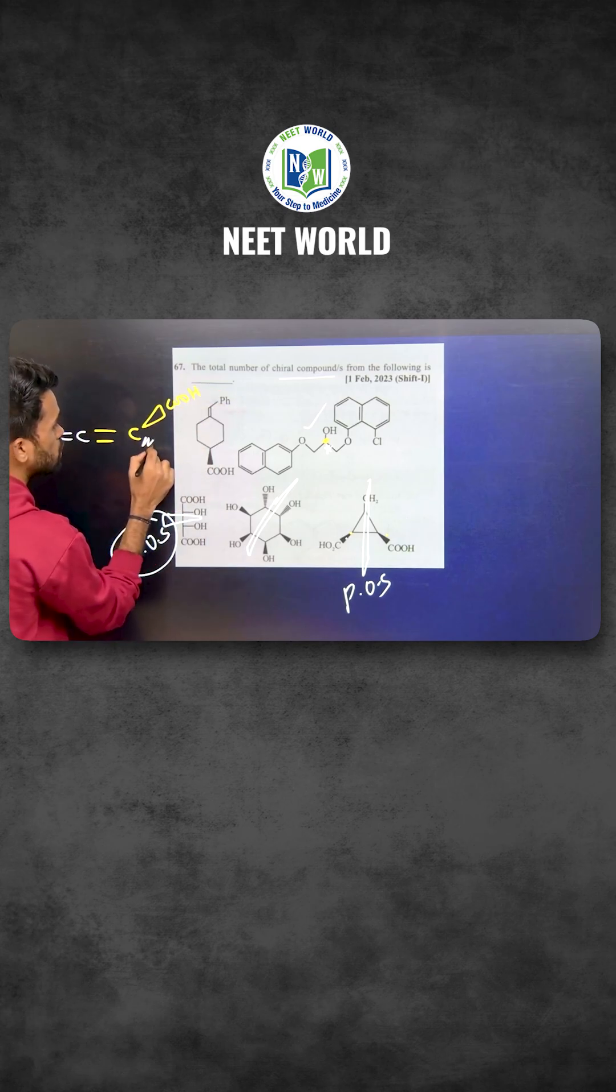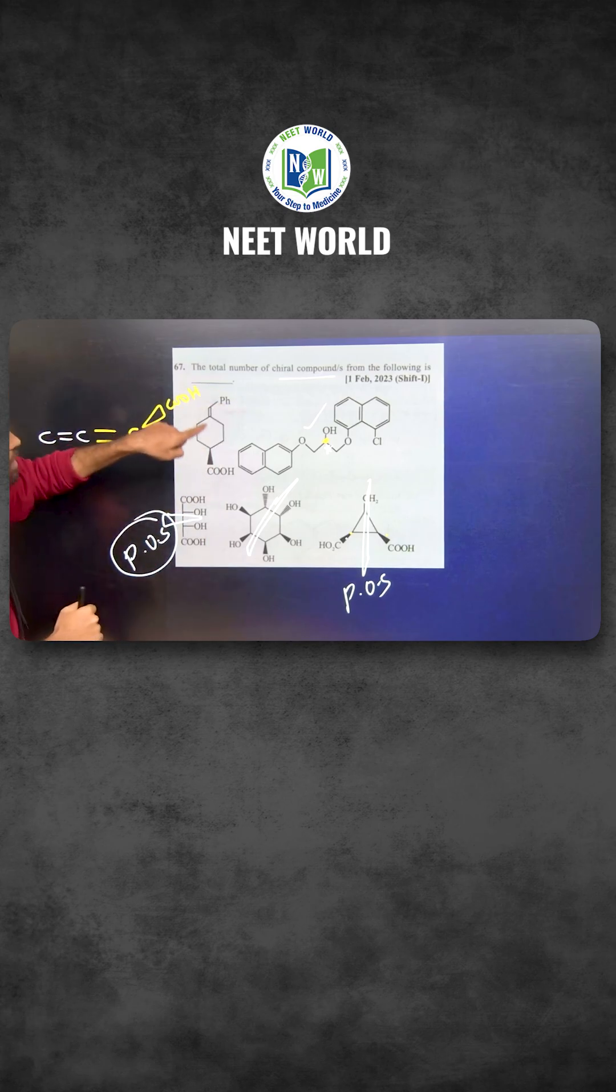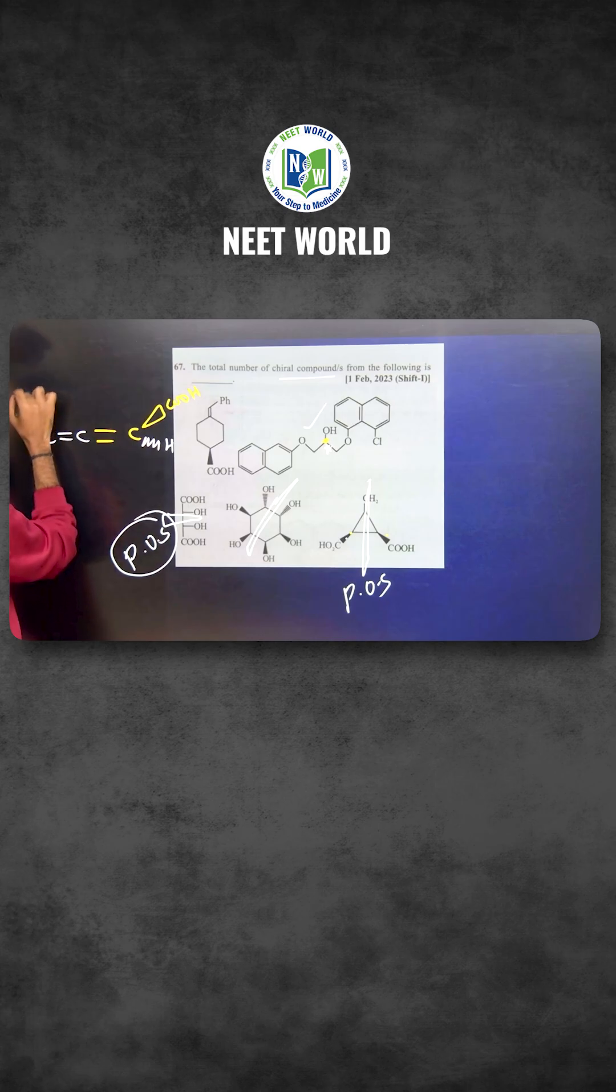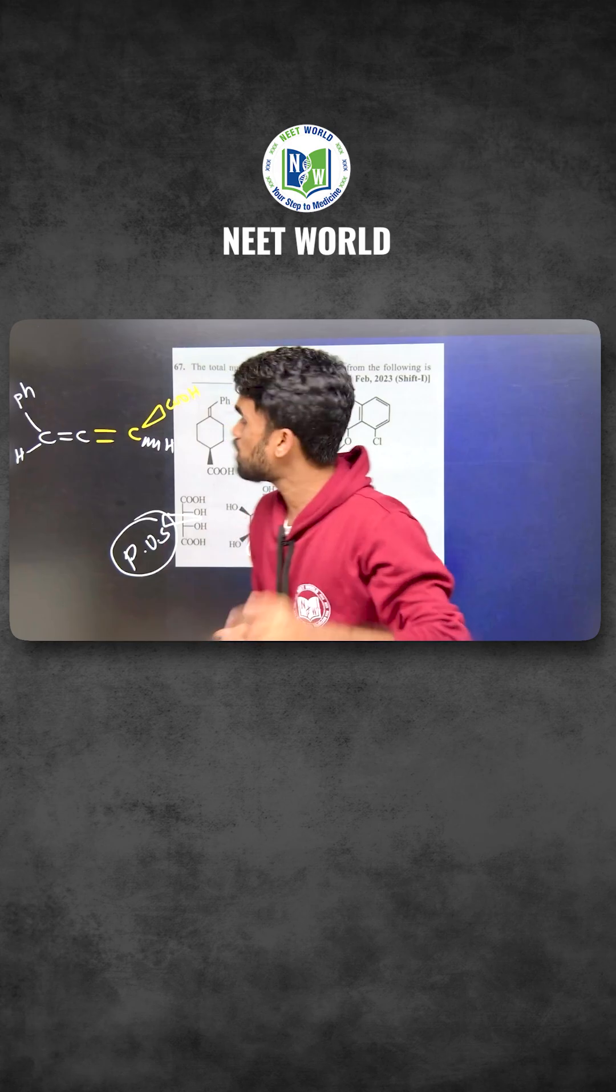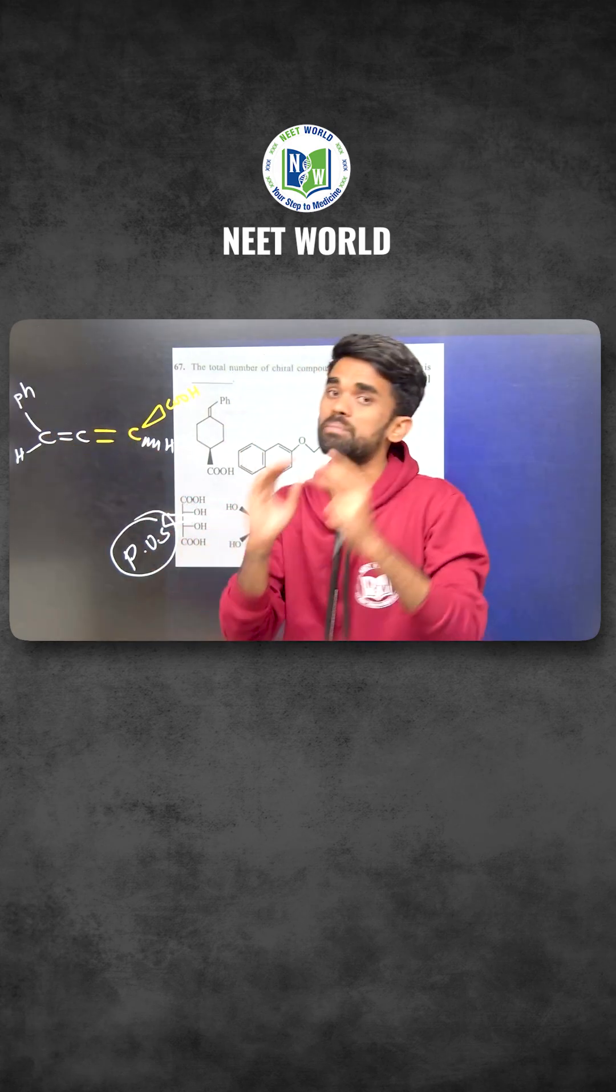After this, substitute the groups given here. So you have one carboxylic acid group over here and one more is hydrogen present like this. And this side you have one phenyl group and another one is hydrogen. Now this is also optically active.